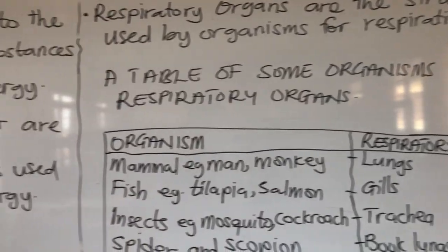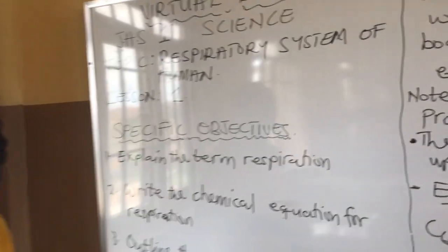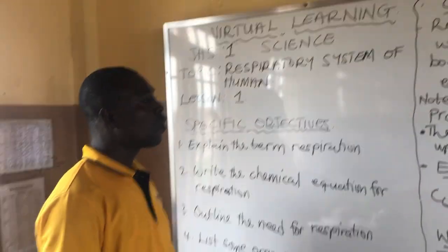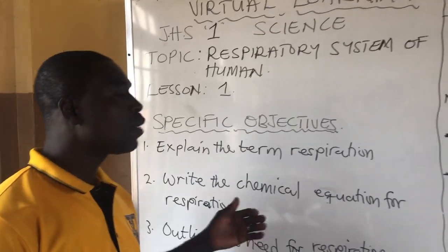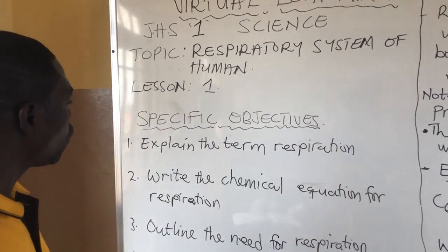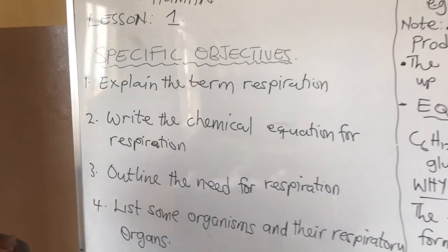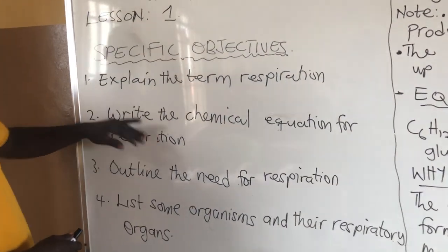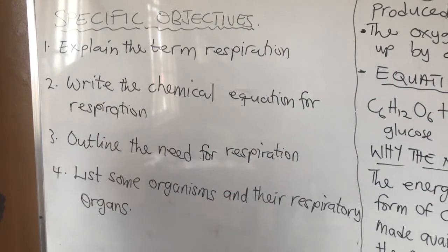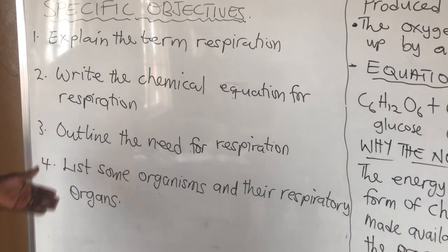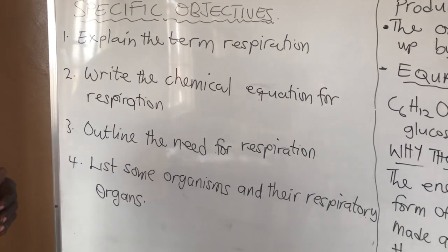We are expecting to achieve something at the end of the lesson. I urge you to pay attention to this video so that by the end of the lesson you should be able to: one, explain the term respiration; two, write the chemical equation for respiration; three, outline the need for respiration; and four, list some organisms and their respiratory organs.